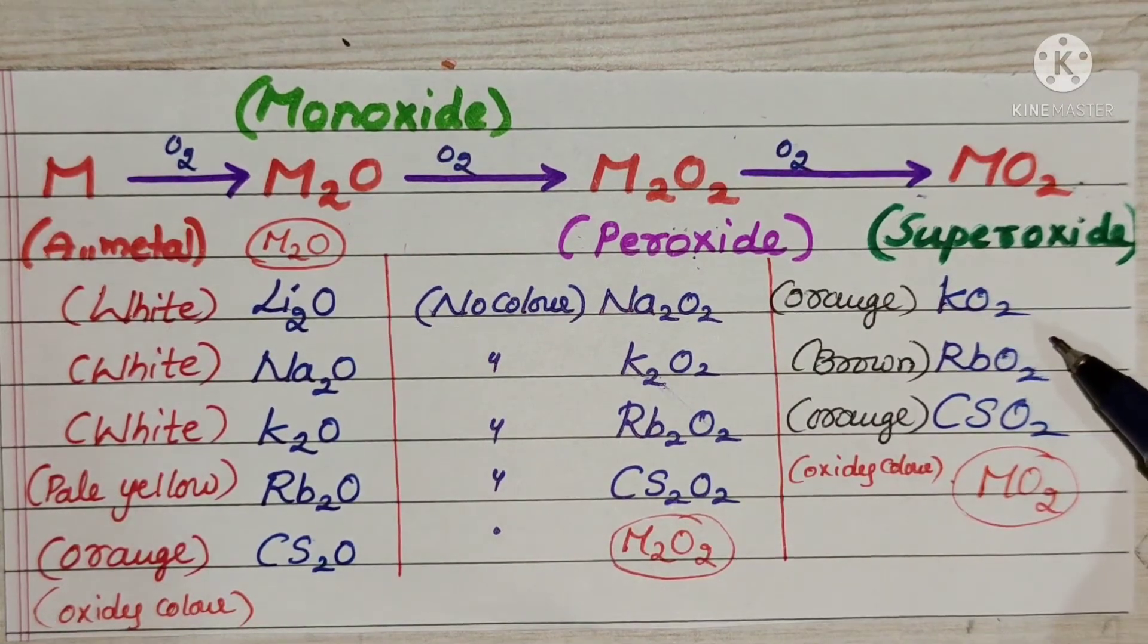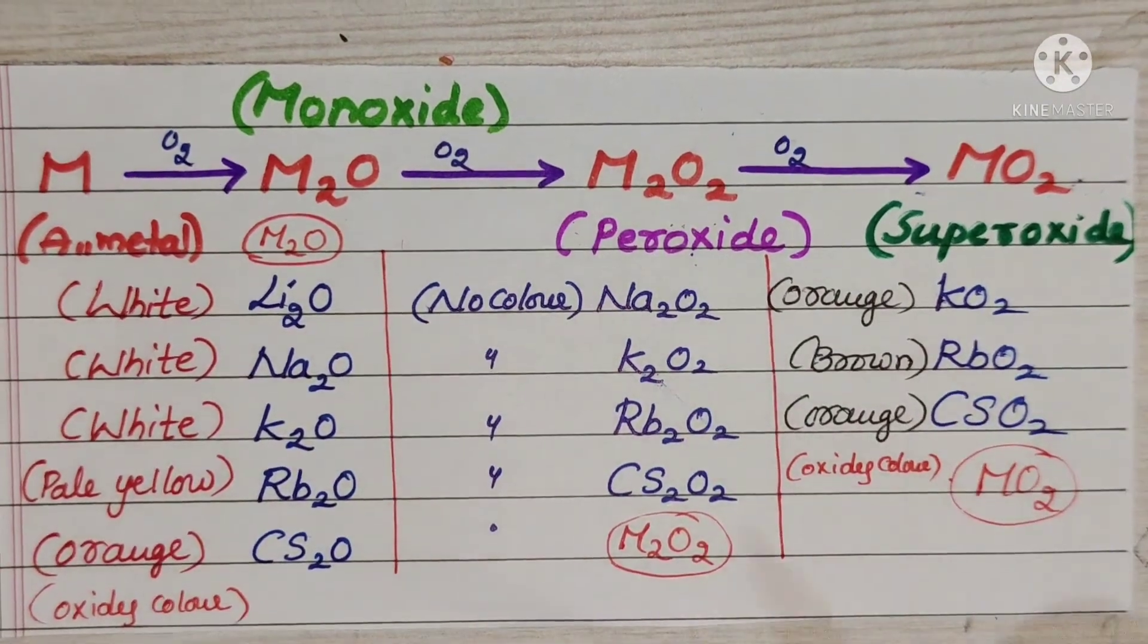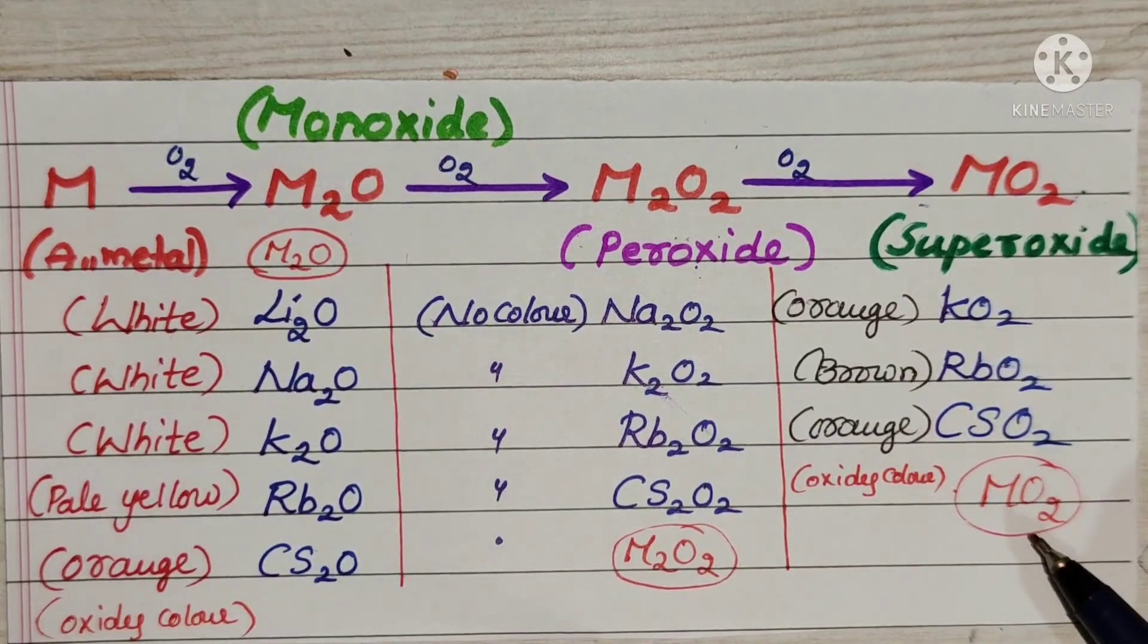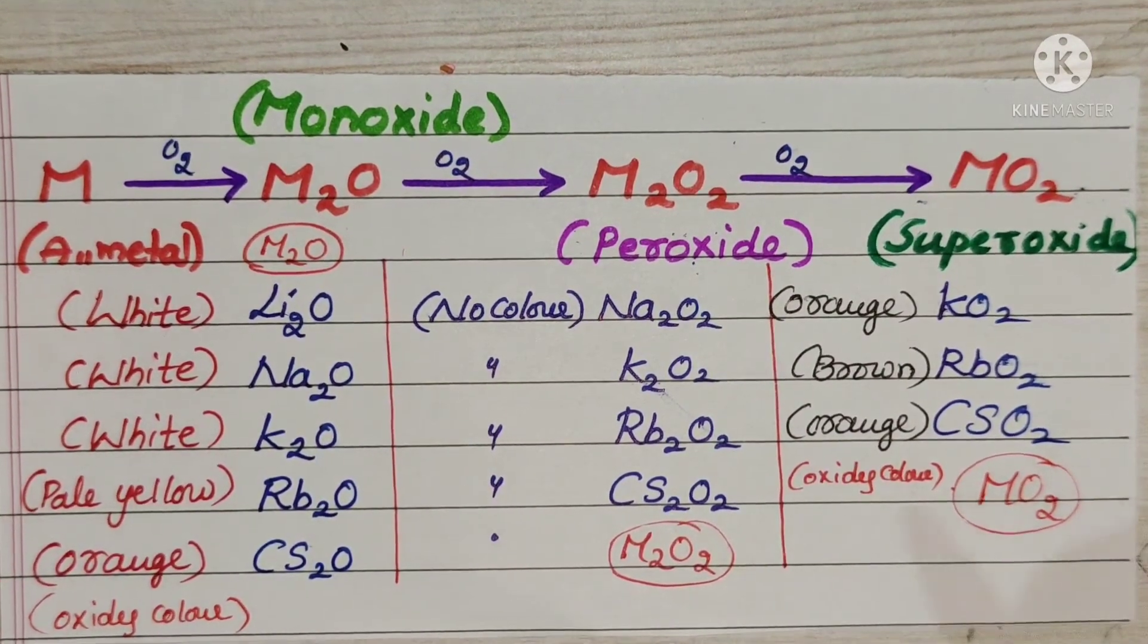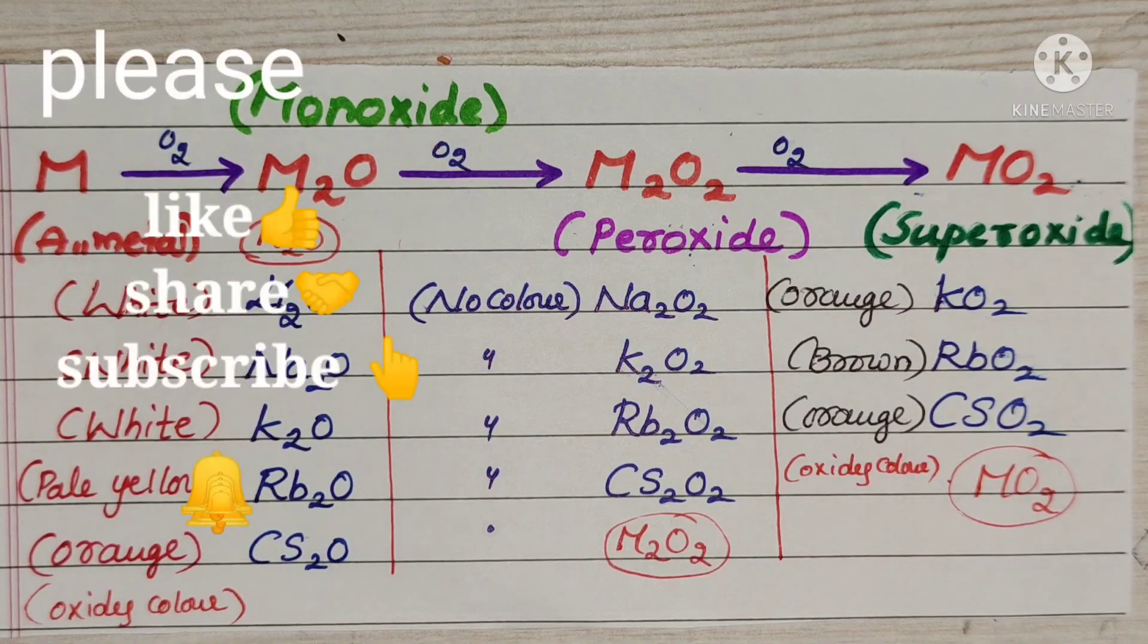For superoxides: potassium superoxide gives orange color, rubidium superoxide gives brown color, cesium superoxide gives orange color. All these have MO2 formula. Simply you have to remember like this: oxides, peroxides, superoxides and colors of the oxides.